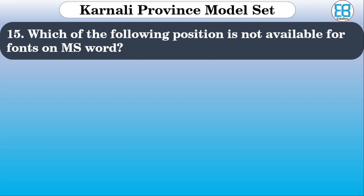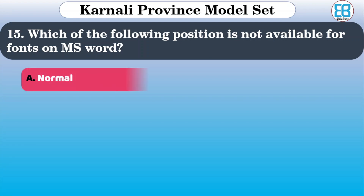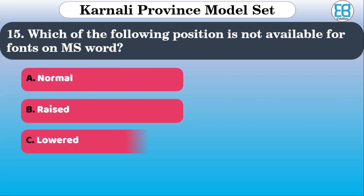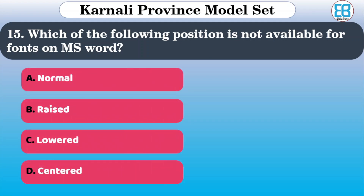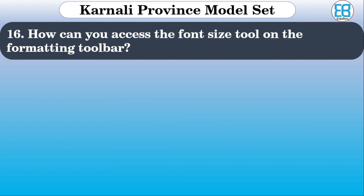Which of the following positions is not available for font in MS Word? The options are: normal, raised, lowered, centered. The correct option is centered — it is not available as a font position.